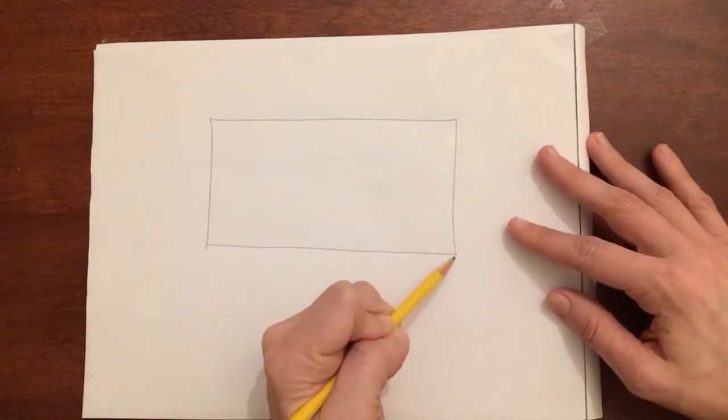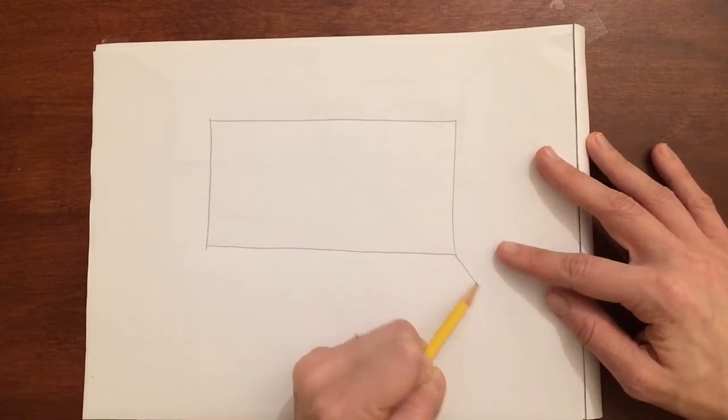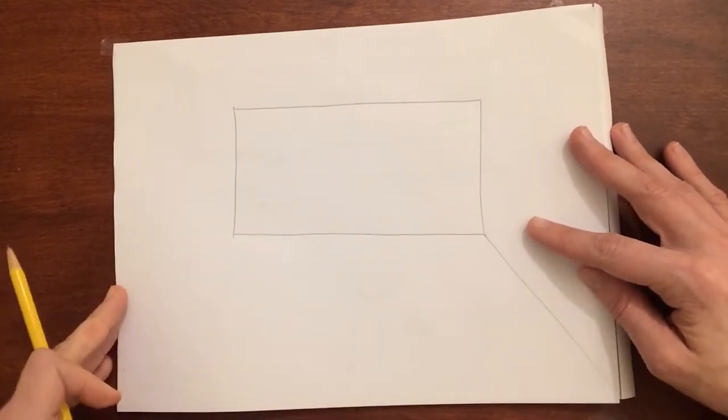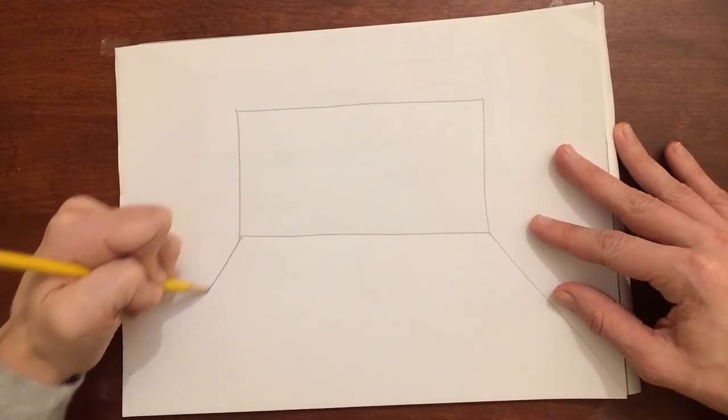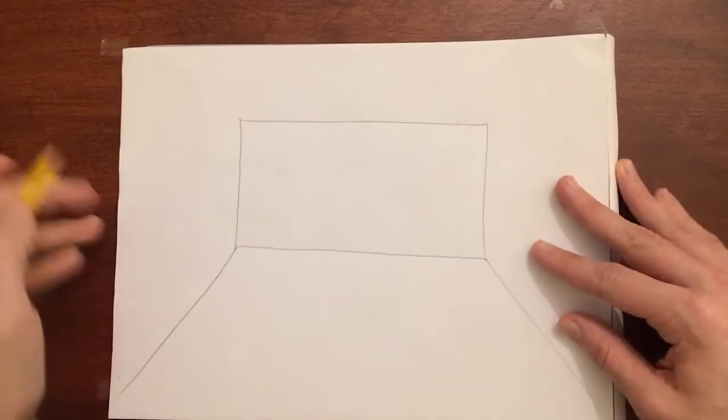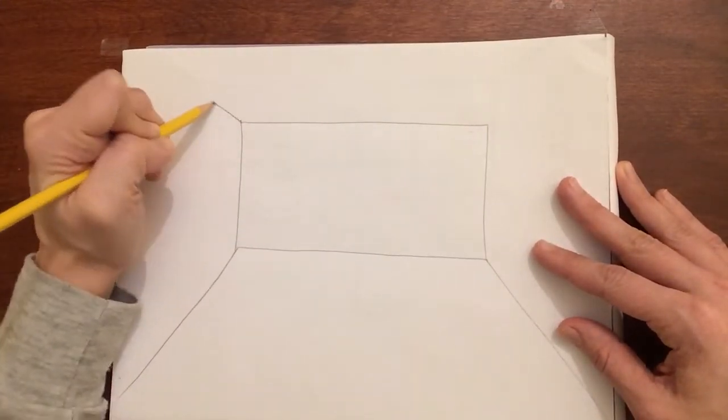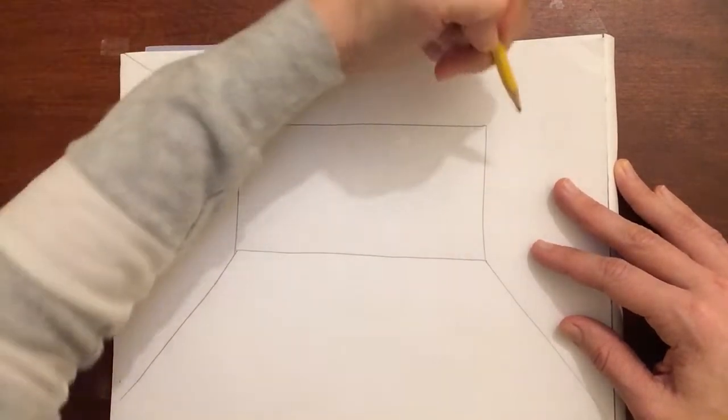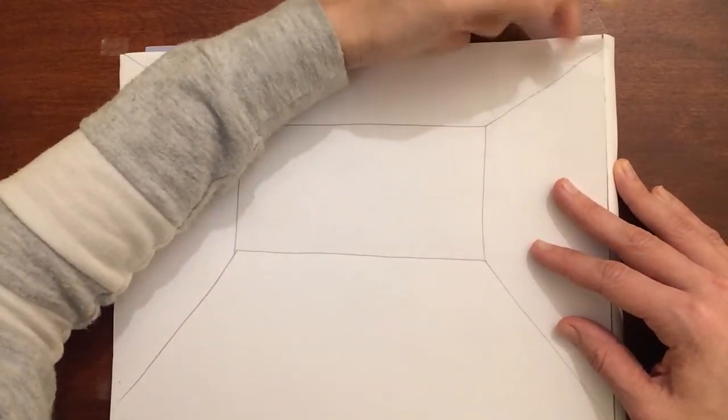Then you take the corner and you draw it off to the edge of your page. This corner off the edge of your page, this corner up and to the left, this corner up and to the right.